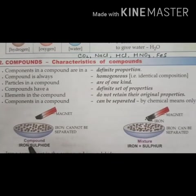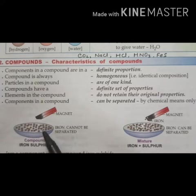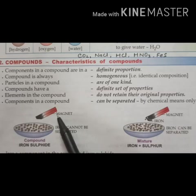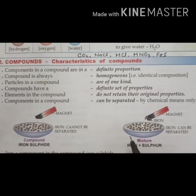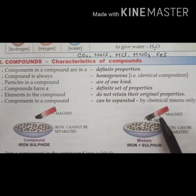For example, even iron mixed with sulfur in a fixed proportion gives iron sulfide. Now, can you separate iron from iron sulfide using a magnet? No. But if you take a mixture — simply mixing iron and sulfur in any proportion — then you can easily separate the iron from that mixture using a magnet. This shows the difference between a compound and a mixture.